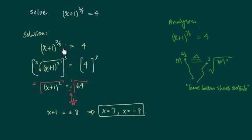Substituting back into the original equation, both solutions satisfy the equation. So the final answer is x equals 7 or x equals minus 9.